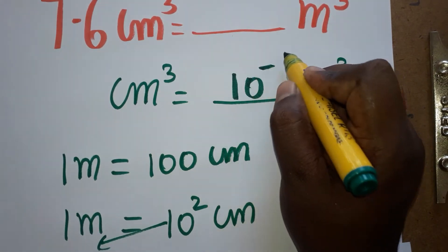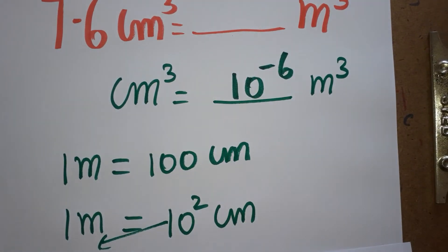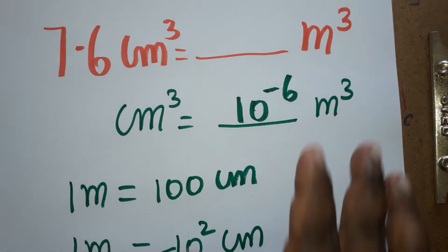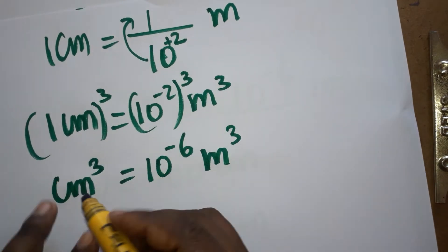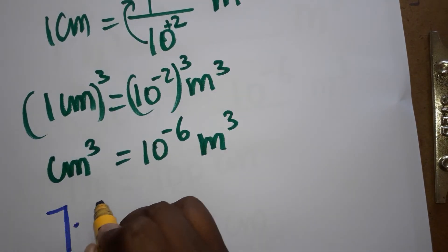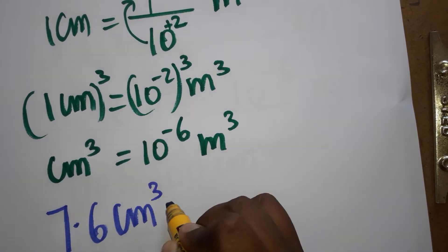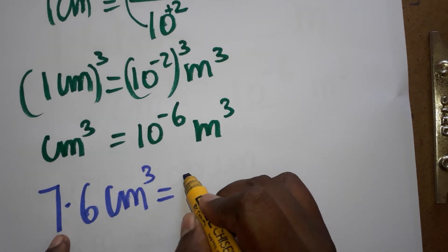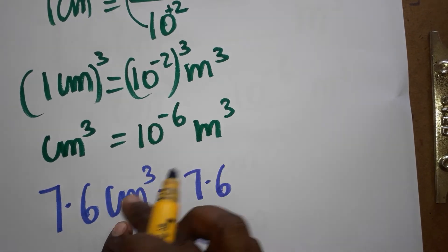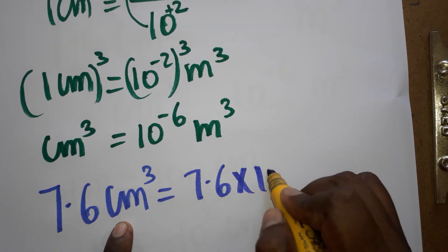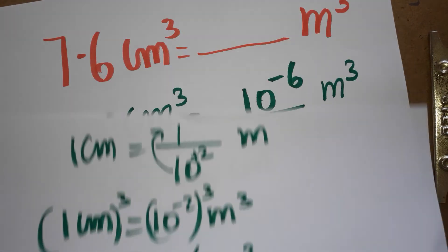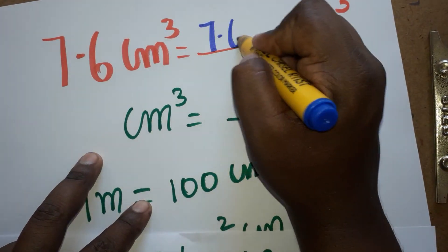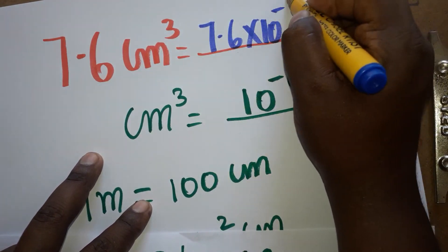Now, 7.6 centimeter cube is equal to how many meter cube? So 7.6 centimeter cube, we multiply by 10 power minus 6 meter cube. We can write it as 7.6 into 10 power minus 6 meter cube.